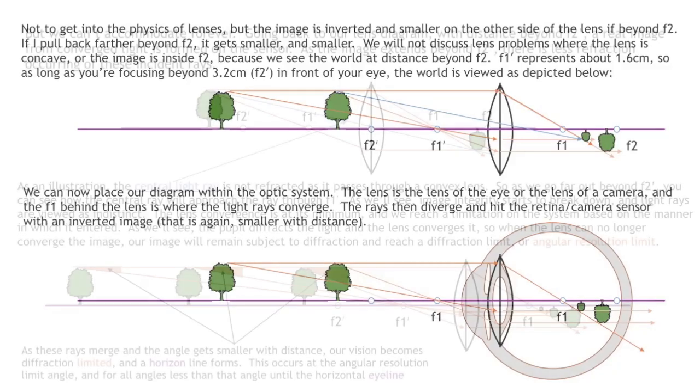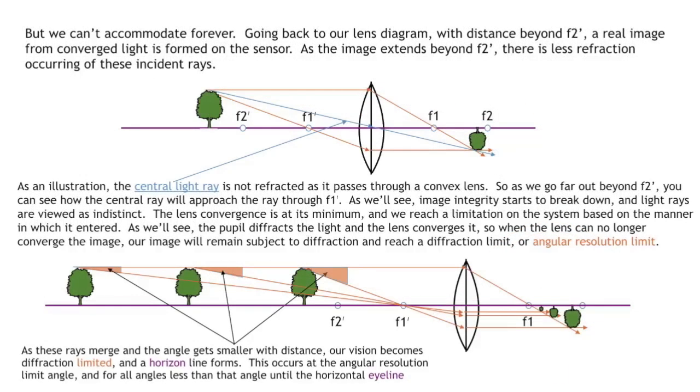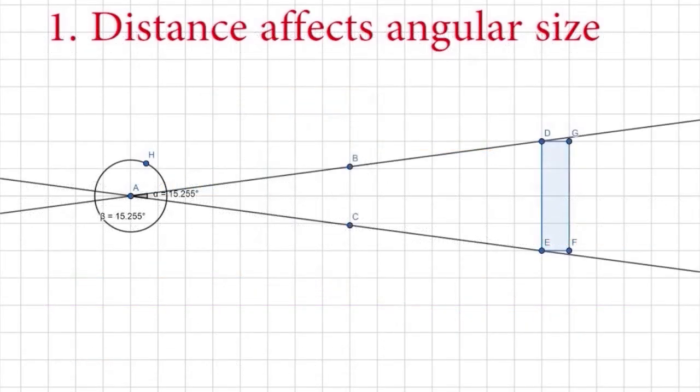The further away you hold the flashlight, the more the light spreads out. For your eye to see something clearly, enough light from the object has to fit through your pupil. The further away something is, the more its light spreads out, so the less of its light makes it through the small opening of your pupil.